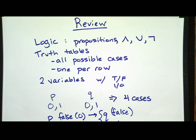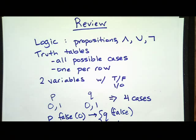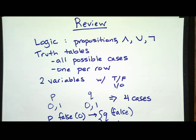We get four cases because each time P is false, Q can be false or true, and when P is true, Q can be false or true. Every additional variable doubles the row count. For example, if I add a variable R with three possible values to P and Q with two values each, I'd have 4 times 3 equals 12 rows. We'll talk more about that when we get to counting.